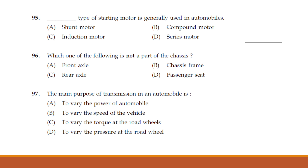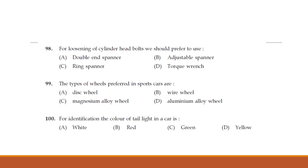The type of starting motor generally used in automobiles is a series motor. A passenger seat is not a part of the chassis. The main purpose of transmission in an automobile is to vary the torque at the road wheels.